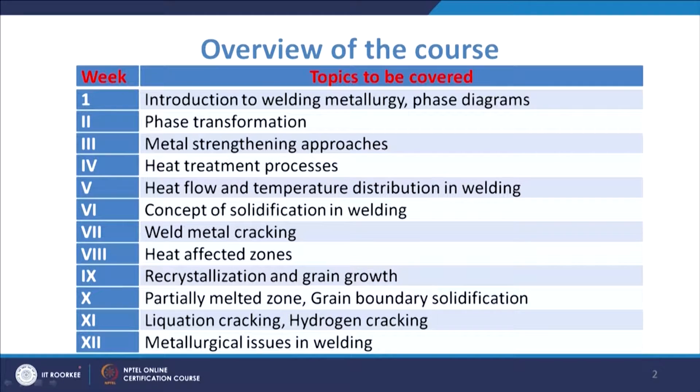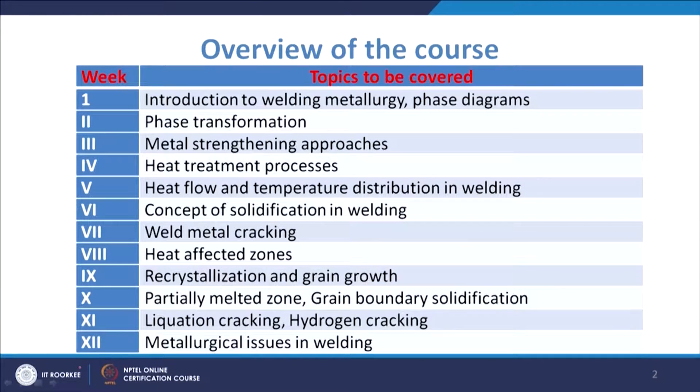Then heat flow and temperature distribution in welding — basically we will talk about how heat flows during the welding process, how the temperature distribution varies at different places, and how temperature varies with time. That will give you an idea of the temperature gradient, and depending on that there will be microstructural changes. Then we have the concept of solidification in welding in week 6.